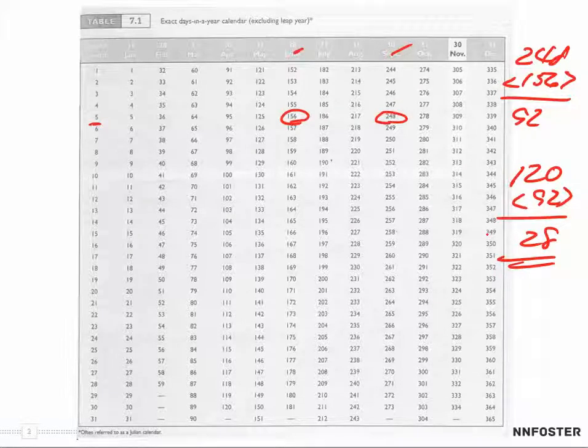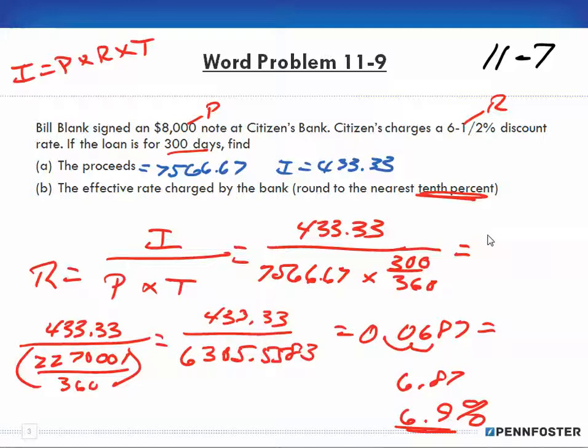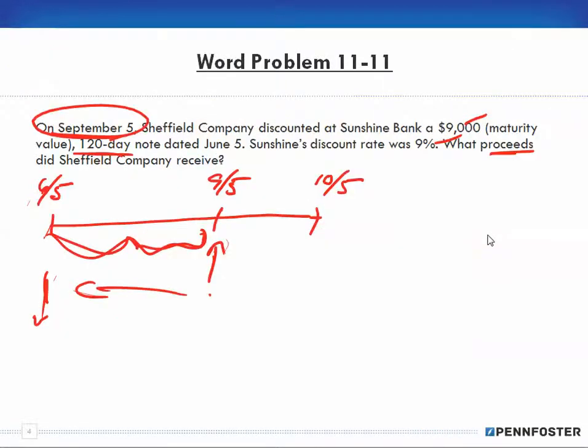Okay, and then I have to come over here to June 5th, which is 156. So I subtract 156, and that means 92 days have passed since June 5th. And if it was a 120-day note and 92 days have passed, that means my discount period is 28 days, 28 days left.